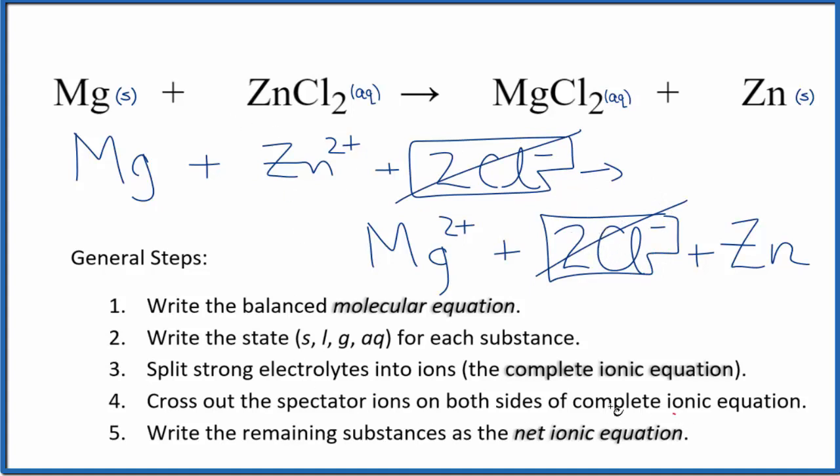What's left is the net ionic equation for Mg plus ZnCl2. I'll clean it up, write the states, and we'll have our net ionic equation.